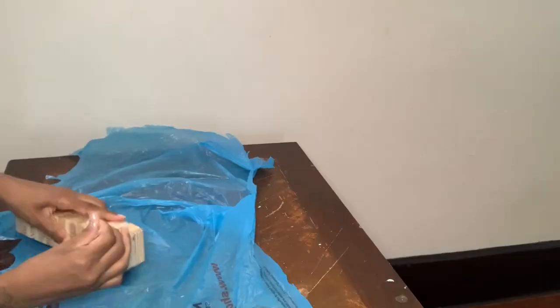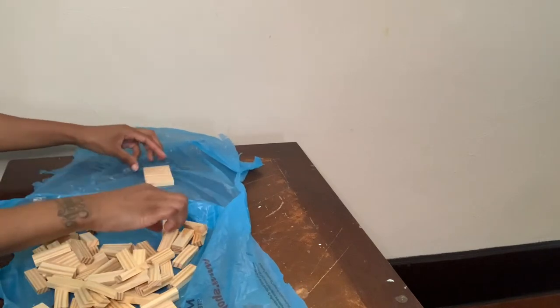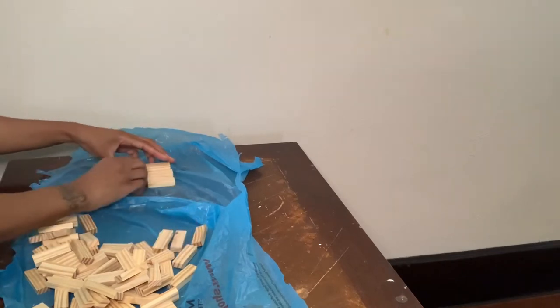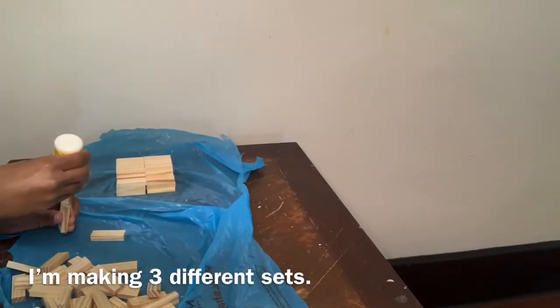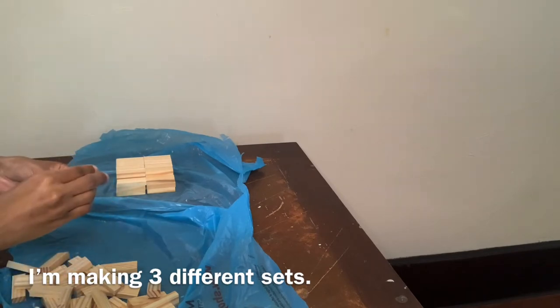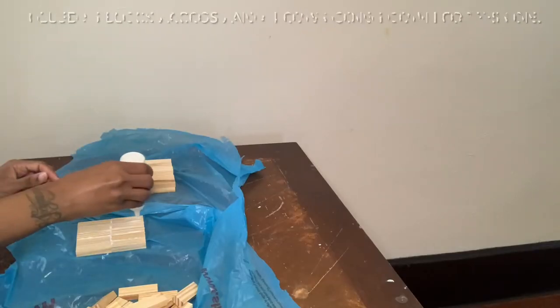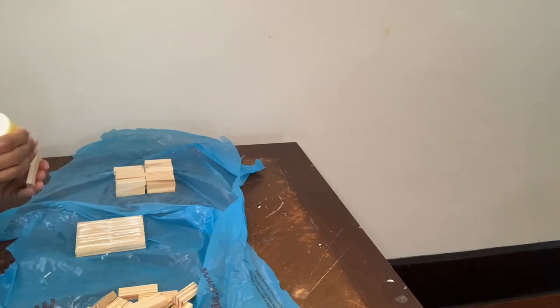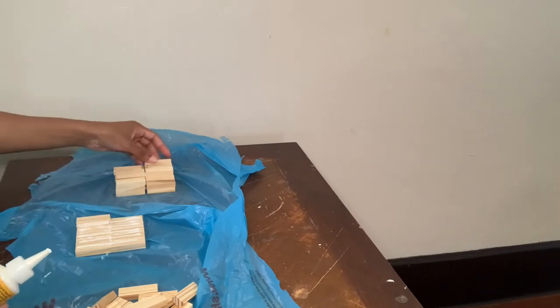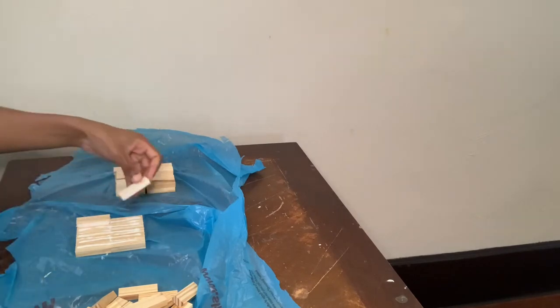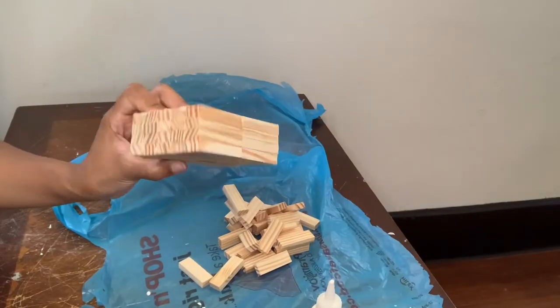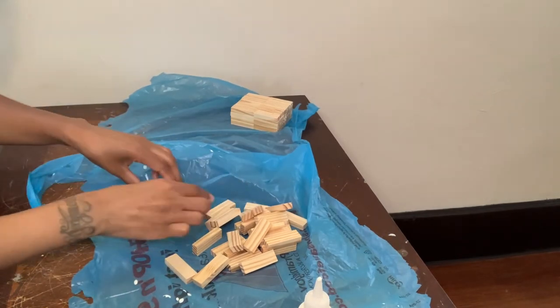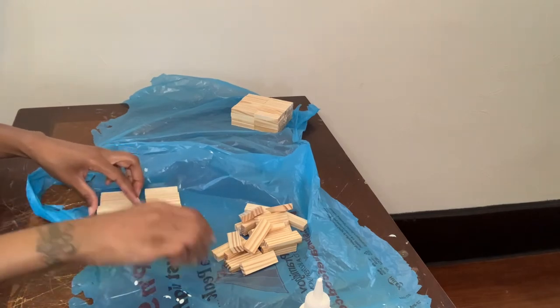So now I'm going to take my wood blocks and I'm going to glue some together and these will basically be the pedestal to my vases. I'm going to complete the same exact steps for the second and third one, but for the second one I'm going to do three rows and for the last one I'm going to do two rows.